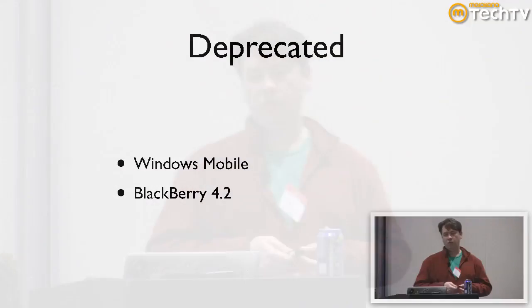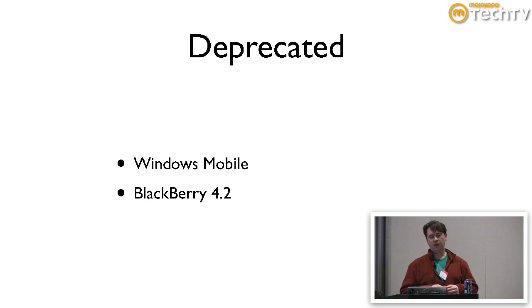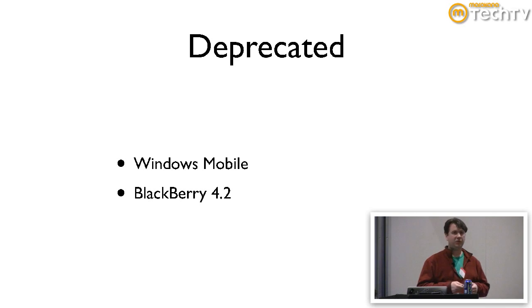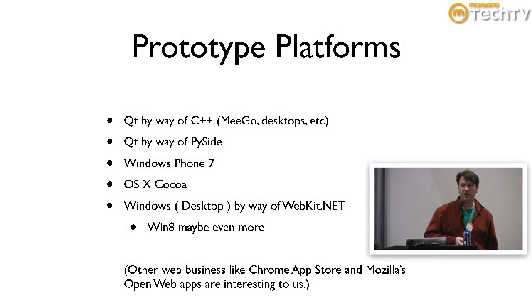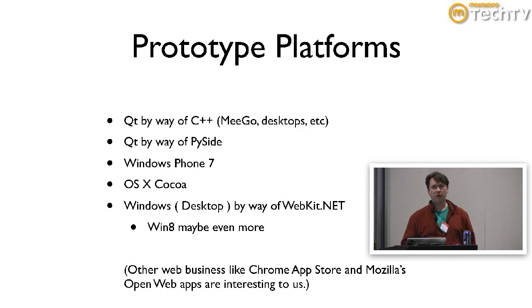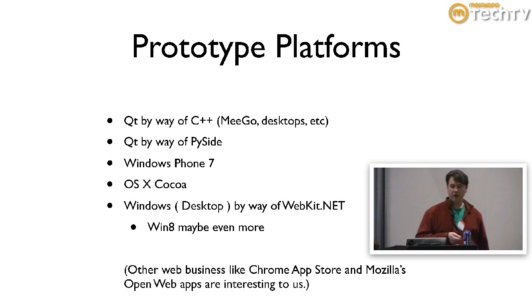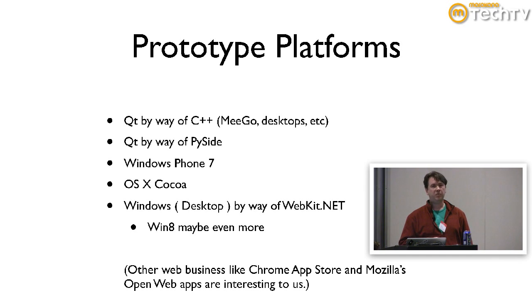We've recently deprecated Windows Mobile. We had to stop working on BlackBerry 4.2 because our developer was going to leave — it was that bad to develop for. There are also some prototype platforms, some things that we're working on. Windows Phone 7, now that we finally have our hands on Mango, is probably going to be the next one to come along. The browser IE9 on the phone is supposed to be a lot better, so we haven't really dug into it completely, but we'll be the first to tell you when it happens.